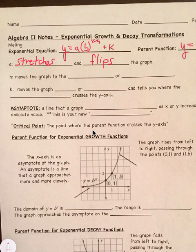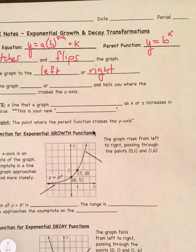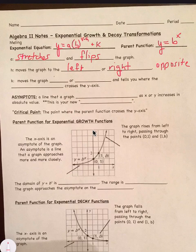Our h value moves the graph left or right. And remember, opposite. Your x's lie. So just think opposite for this one. And then your k value moves up or down. And it's the same. So if k is positive, it moves up. Negative, it moves down.